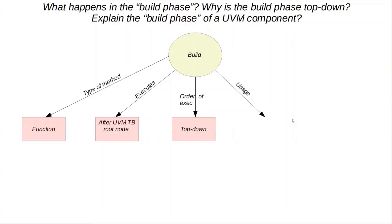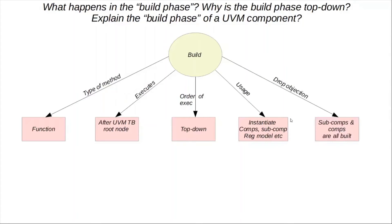Then, what is it mainly used for? A build phase is mainly used to instantiate components and sub-components using the factory definition of these classes. And of course, the build phase is going to drop objection so that the simulation can continue on to the next phase, once all the components and sub-components have been essentially built.